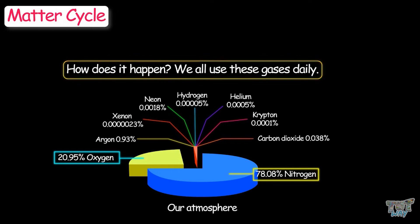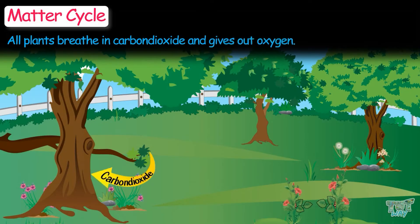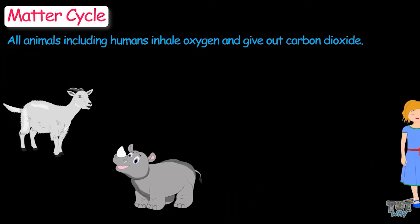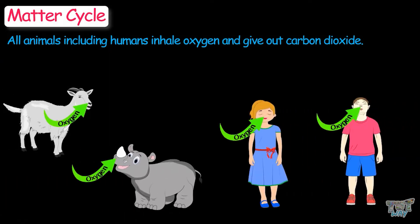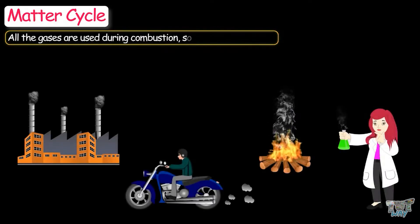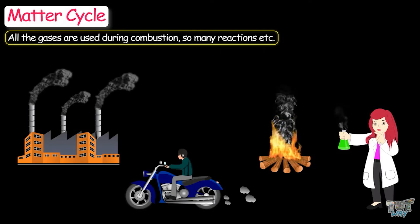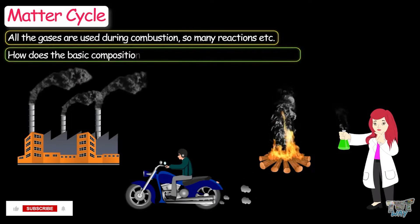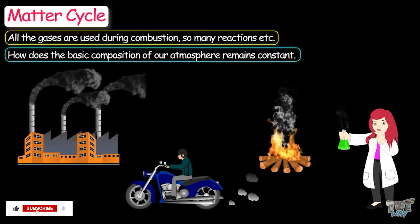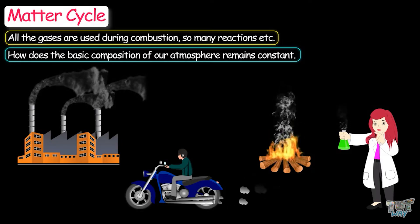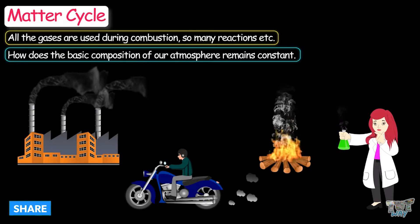We all use these gases on a daily basis. All plants breathe in carbon dioxide and give out oxygen. All of us animals, including humans, inhale oxygen and give out carbon dioxide. All the gases are used during combustion, and so many other reactions occur. So how does the basic composition of the atmosphere remain constant? We will be learning the answer to this question.